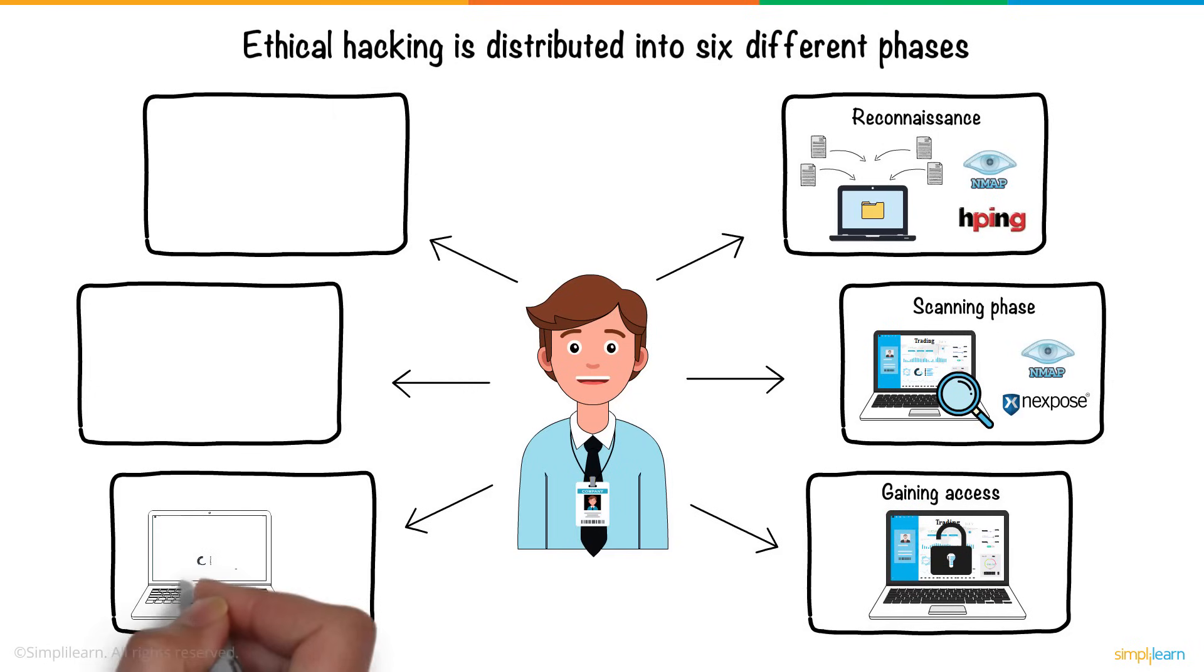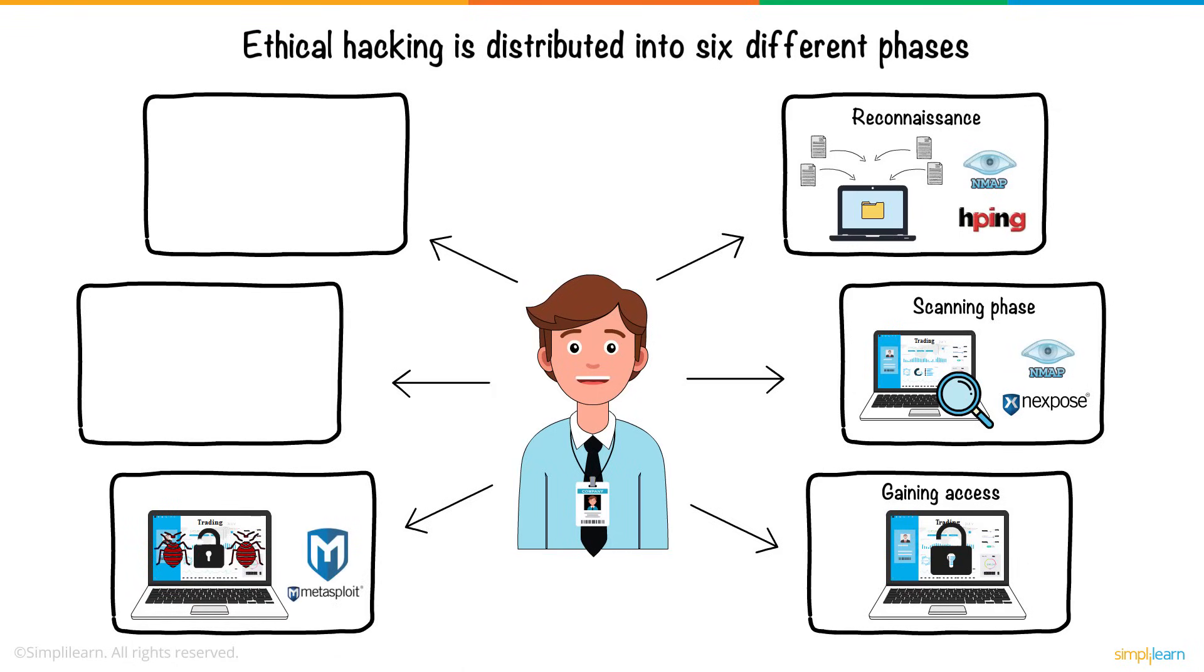After John makes his way through the organization's networks, he tries to maintain his access for future attacks by installing back doors in the target system. The Metasploit tool helps him with this. This phase is called maintaining access.